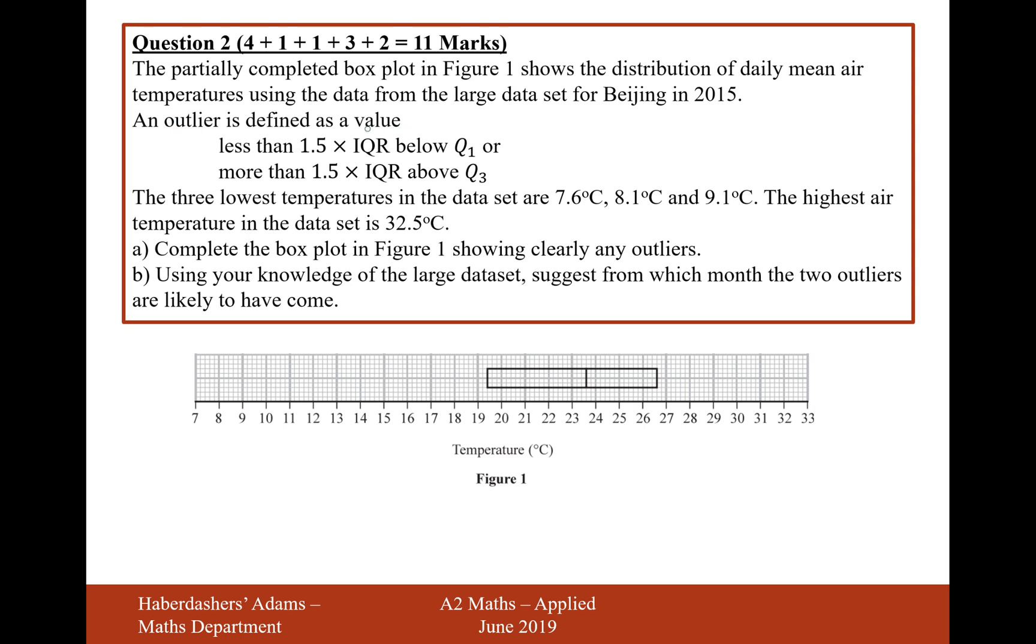An outlier is defined as a value less than 1.5 times the interquartile range below Q1, or more than 1.5 times the interquartile range above Q3.